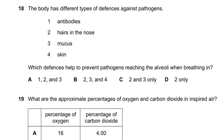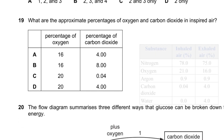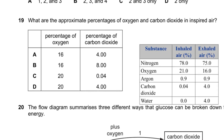Question 18: The body has different defenses against pathogens. Which defenses help prevent pathogens reaching the alveoli when breathing in? Hairs in the nose — yes. Mucus — yes. Skin — no. Antibodies — no, because by the time antibodies act, pathogens would already be in the alveoli.